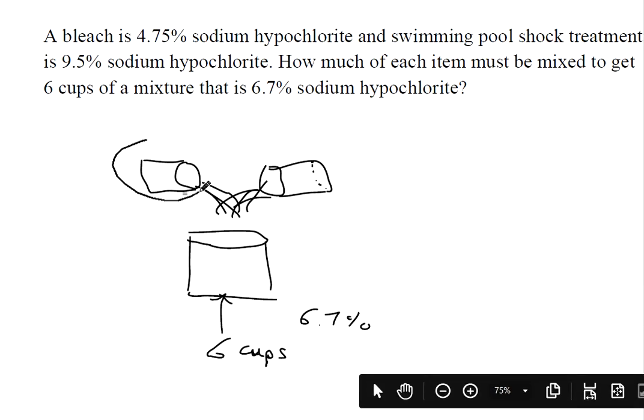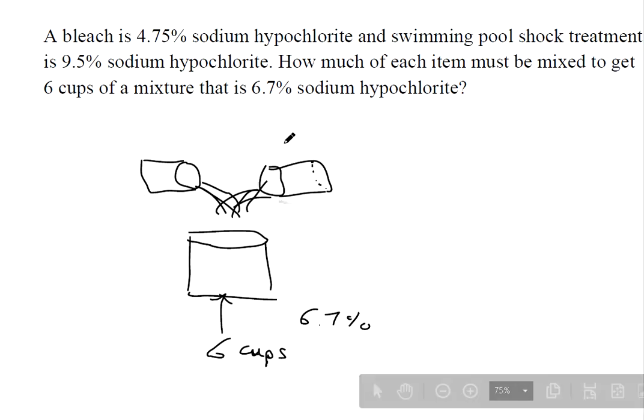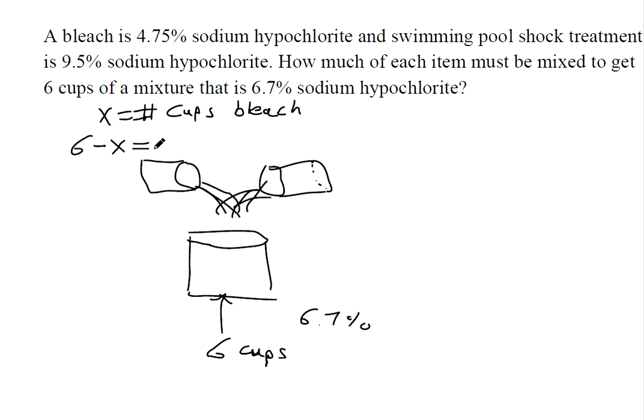We don't know how much from this one or this one, but like question nine, we can use one variable. Let x be the number of cups of bleach. Then we have a nice expression for the cups of shock treatment. Total together they're supposed to make six cups, so the shock treatment should be 6 minus x.